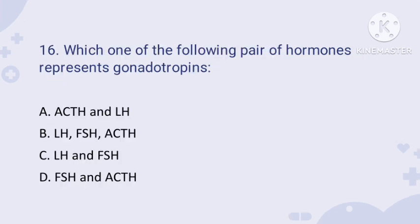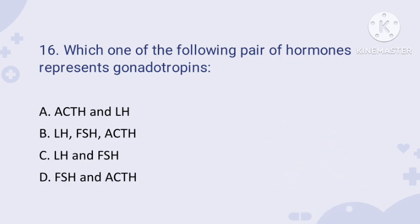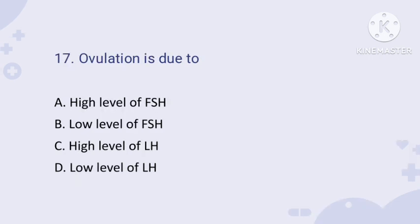Question number sixteen: which pair of hormones represents gonadotropins? The right answer is option C — LH and FSH: luteinizing hormone and follicle stimulating hormone. These two hormones stimulate the gonads, and therefore they are called gonadotropins.